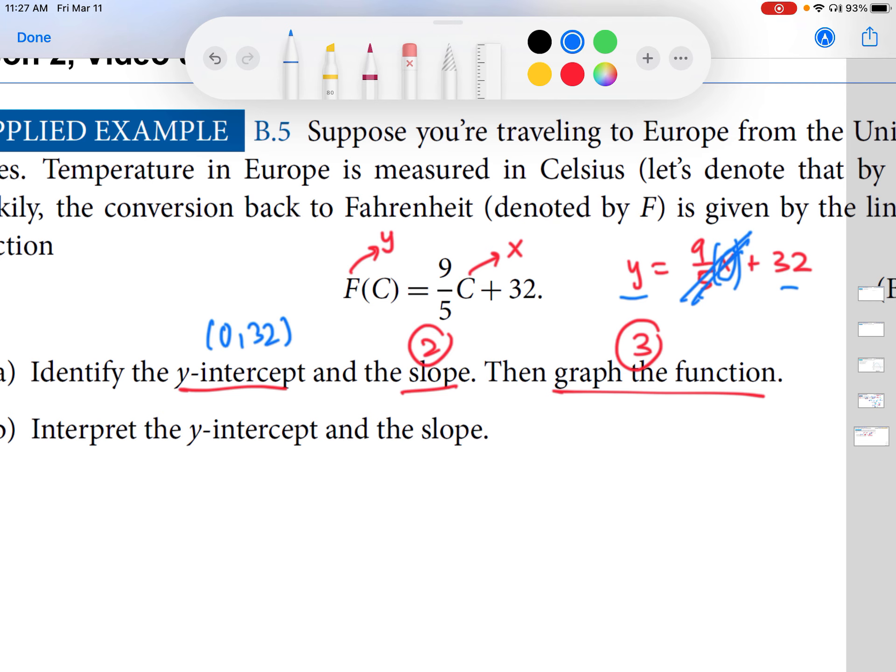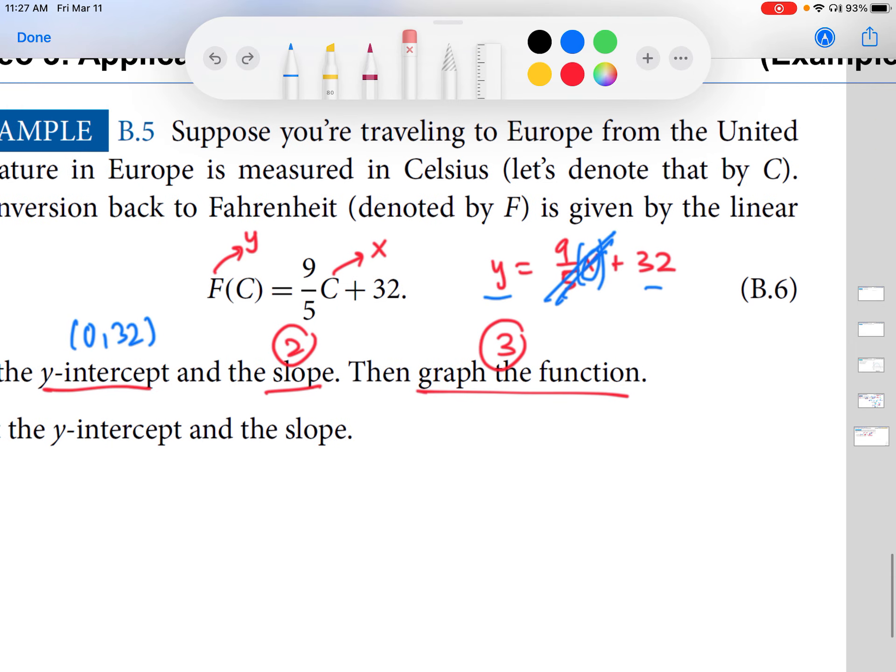Again, that means when C in this case, that's kind of like our x, when the temperature in Celsius is 0 degrees, then the temperature in Fahrenheit is 32 degrees. That's what we consider freezing here out in the U.S. So, now let's look at the second question that we're asked for. What is the slope?